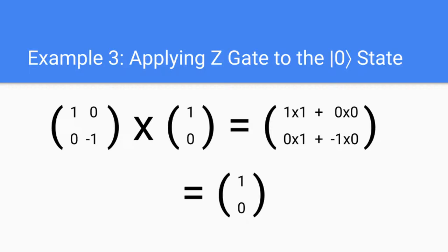First, let's take a look at what happens when we apply the Z gate to a qubit in the |0⟩ state. We multiply the Z gate matrix on the left by the |0⟩ state matrix on the right. We get 1 times 1 plus 0 times 0 on the top, and 0 times 1 plus negative 1 times 0 on the bottom. Adding these values up, we get 1 on the top and 0 on the bottom, showing us that when we apply the Z gate to the |0⟩ state, we get back the |0⟩ state.